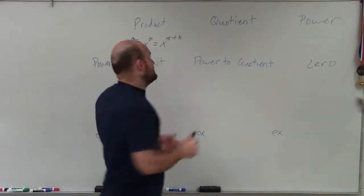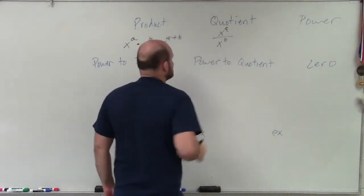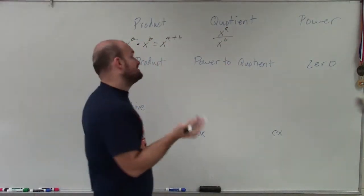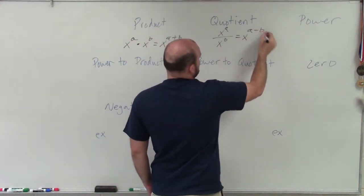When I have a quotient, basically the same thing. Now, instead of multiplying, when I have exponents with the same base with the same or different powers, then all I'm simply going to do is subtract the exponents.